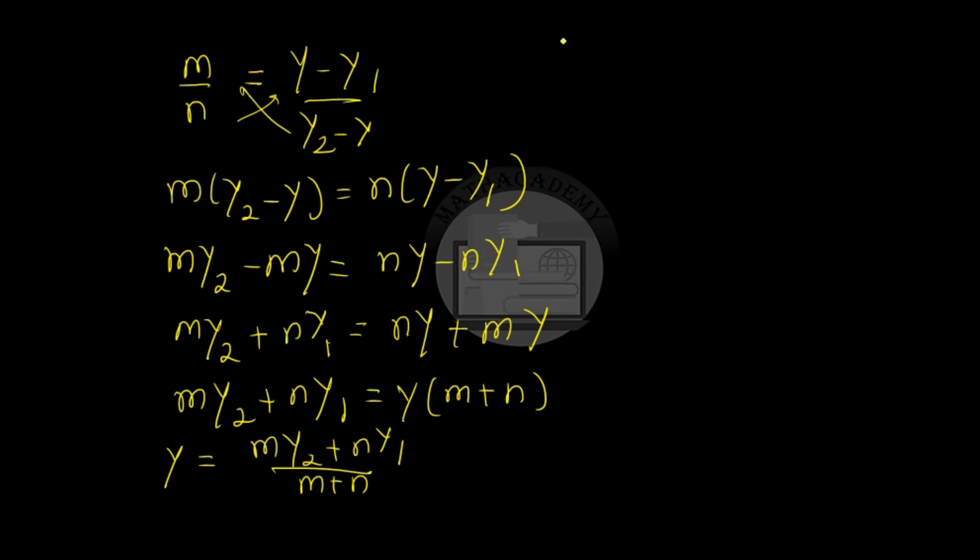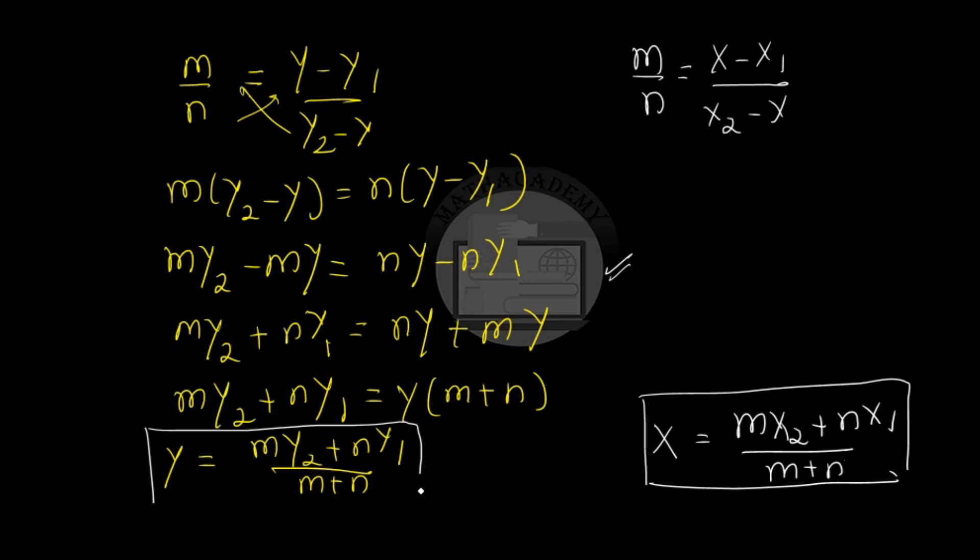And similarly, we can take m over n is equal to x minus x1 over x2 minus x. And when we simplify it, we will get x is equal to mx2 plus nx1 over m plus n. We will be simplifying it the same way as we have simplified for y, and this is our section formula. And hence, we have proved the section formula.